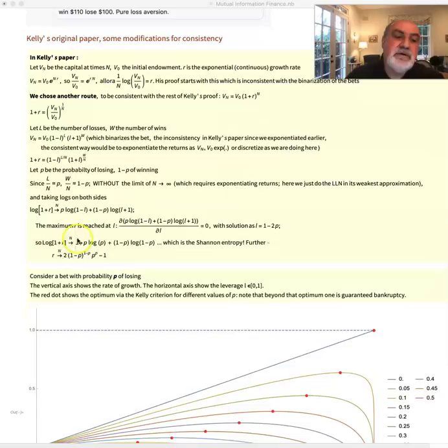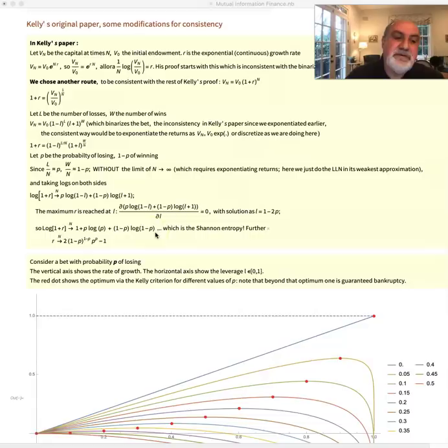And as you notice, something quite strange is that your long-term return, 1 plus R, is going to be pretty much the same as the Shannon entropy.